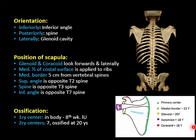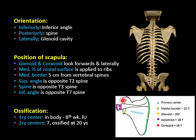Regarding ossification of the scapula, there is a primary center in the body which starts in the eighth intrauterine week. Secondary centers are present on the medial border, in the acromion, in the coracoid, and on the lips of the glenoid cavity. All of these eventually unite with the bone.